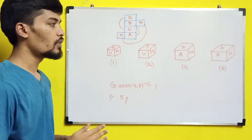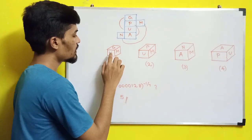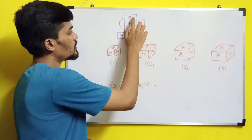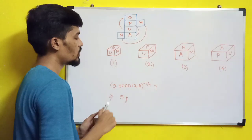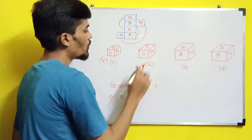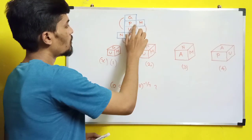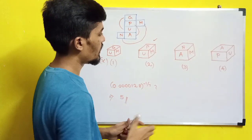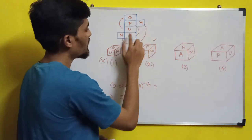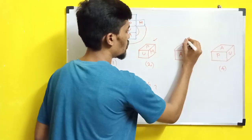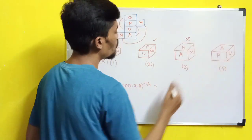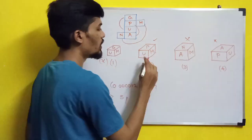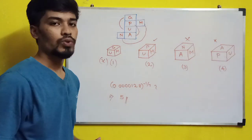Checking each option: Option 1 shows g and u adjacent — they are opposite, so it is wrong. Option 2 shows p, u, m — these are all valid adjacent faces, so it is correct. Option 3 shows n and m adjacent — they are opposite, so it is wrong. Option 4 shows a and p adjacent — they are opposite, so it is wrong. Therefore, only option 2 is correct.